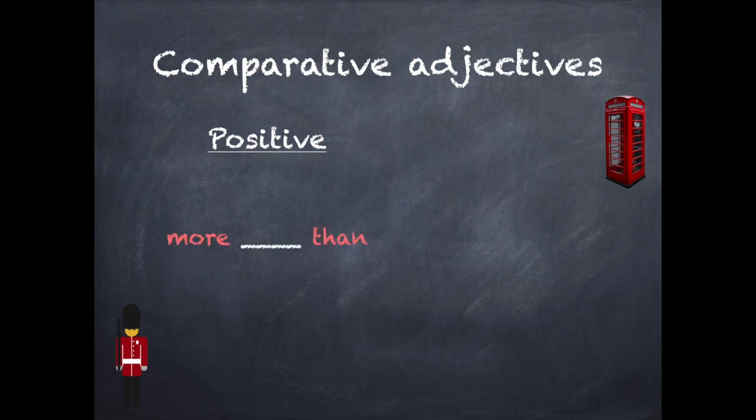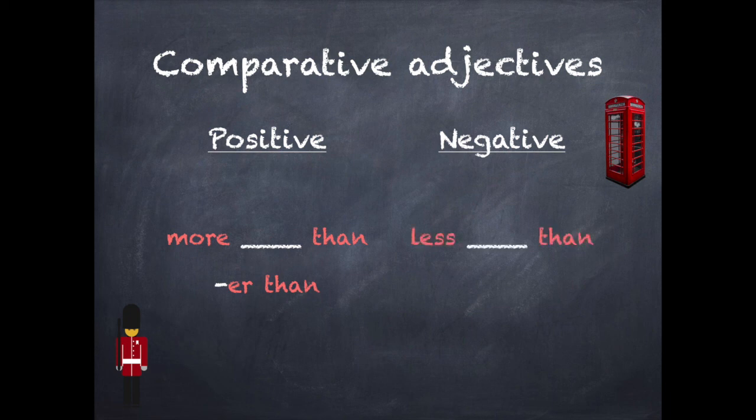For the positive ones we will use more than if it's a long adjective or we will add er at the end of the adjective if it's a short one. The negative comparative is easier, we will always use less than.